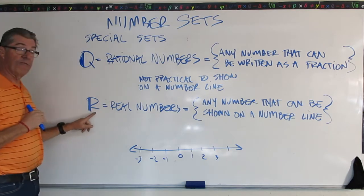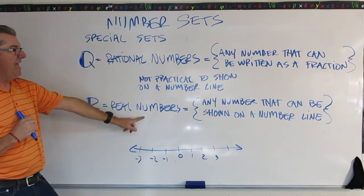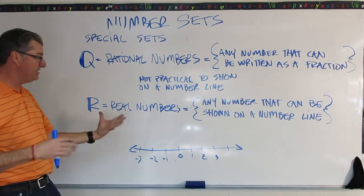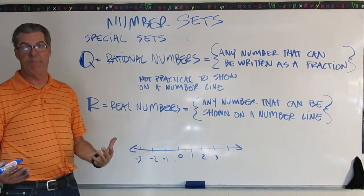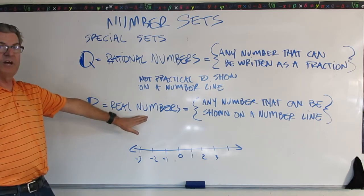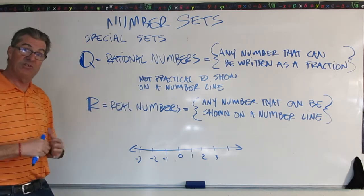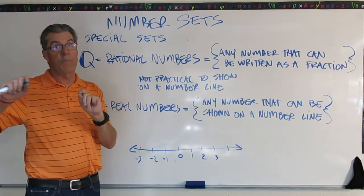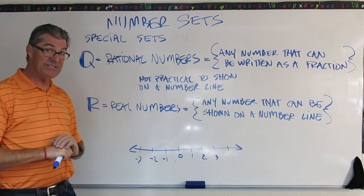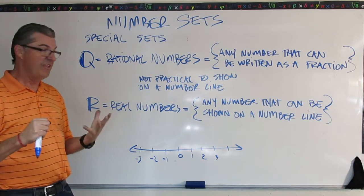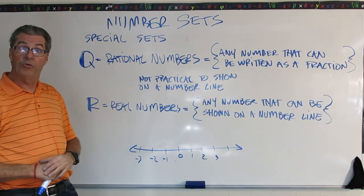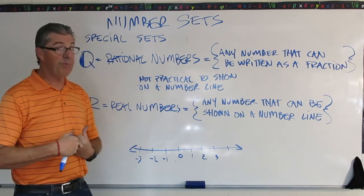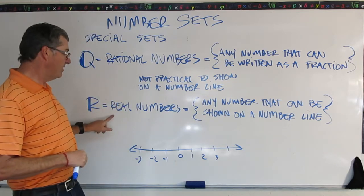Let's go to R for real numbers. Any number that can be shown on a number line. So this is where we operate in mathematics almost all the time. We're dealing with real numbers. These are numbers that can be shown on a number line, like pi. Maybe that decimal repeats forever, but it is on the number line somewhere. The same thing with the square root of 2. That also repeats forever. It's irrational, but you can put it on a number line. So that's a real number.